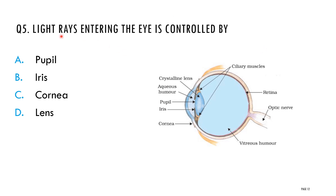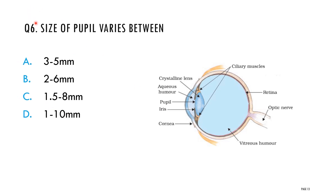Question five: light rays entering the eye are controlled by which part? Options: pupil, iris, cornea, lens. The correct answer is pupil. Question six: the size of the pupil varies between — options: 3 to 5 mm, 2 to 6 mm, 1.5 to 8 mm, 1 to 10 mm. The correct answer is 1.5 to 8 mm.